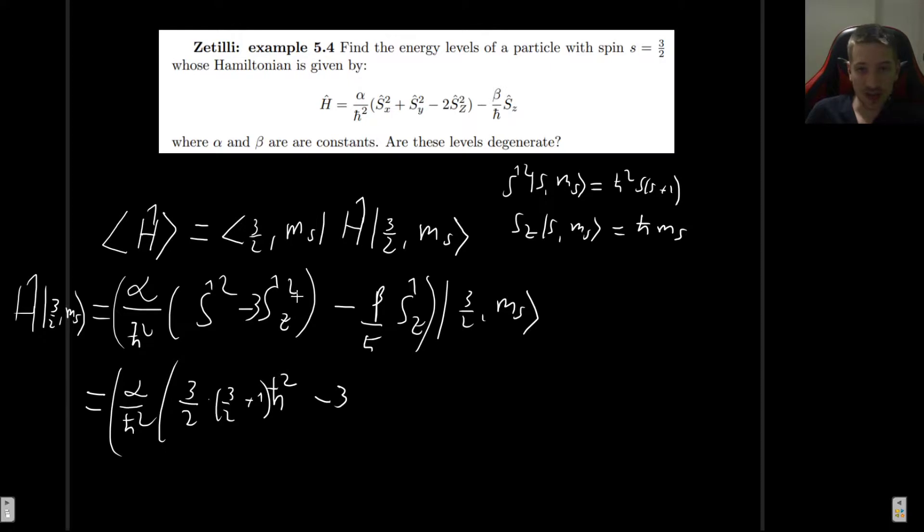and this is multiplied by h-bar squared. Then we have minus 3 times s_z squared. Well, what is s_z squared? It's simply applying s_z twice. So what is s_z? It's h-bar m_s. So we get h-bar squared m_s squared. And yes, I was just checking the parentheses. There's enough parentheses. So then we have minus beta h-bar. And once again, s_z, which is simply h-bar m_s.